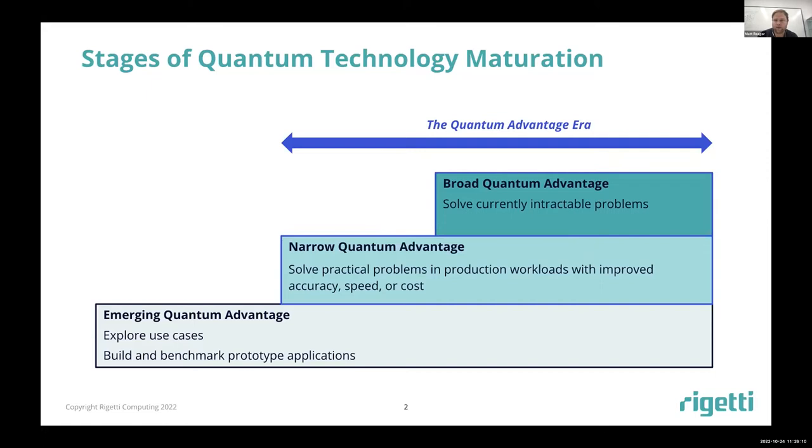The shift towards narrow quantum advantage is one that we're very focused on today, where we're looking at improvements to accuracy, speed, or cost as key benchmarks. A lot of this is based on heuristics, but also has the potential to be guided by collaborations like we have ongoing with Perlmutter.